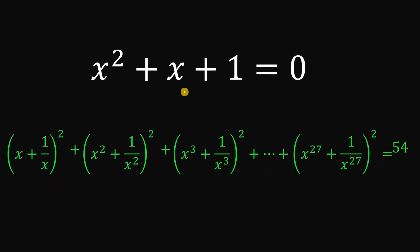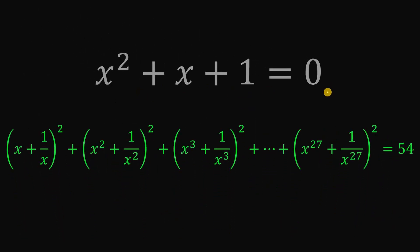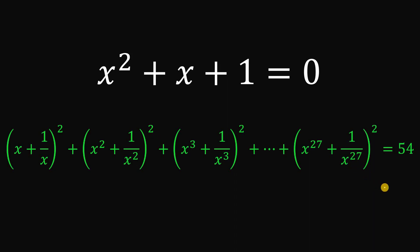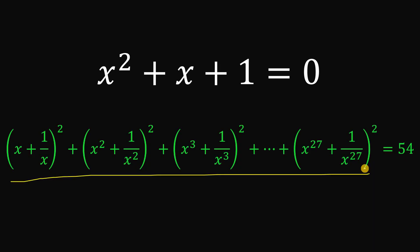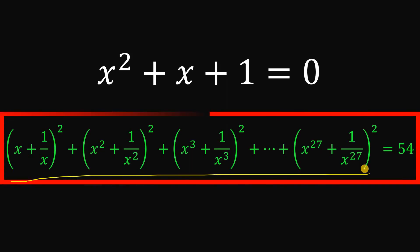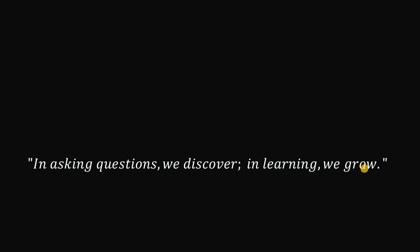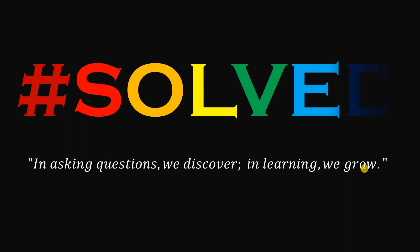Therefore, given x² + x + 1 = 0, the numerical value of (x + 1/x)² + (x² + 1/x²)² + … + (x²⁷ + 1/x²⁷)² is simply equal to 54. As always, don't stop asking questions — if you ask questions, we discover; if we discover, we learn; and in learning, we grow. See you in the next video.